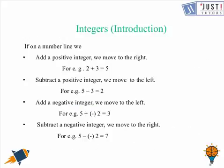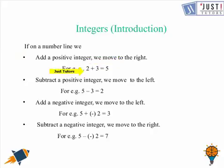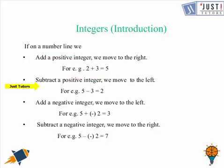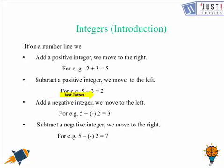As we perform operations on positive numbers, we can do the same with a combination of positive and negative numbers — that is, integers. On a number line, if we add a positive integer we move to the right. For example, 2 + 3 = 5, and 5 is to the right of 2. Likewise, if we subtract a positive integer we move to the left. For example, 5 take away 3 is 2, and 2 is to the left of 5.